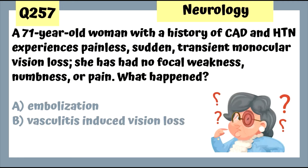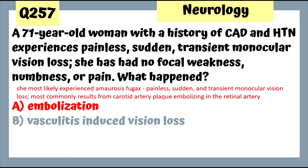Question 257: A 71-year-old woman with a history of DVT and hypertension experiences painless, sudden, transient monocular vision loss with no focal weakness or pain. This is an embolization — she most likely experienced amaurosis fugax, which is painless sudden transient monocular vision loss, most commonly from carotid artery plaque embolizing into the retinal artery.